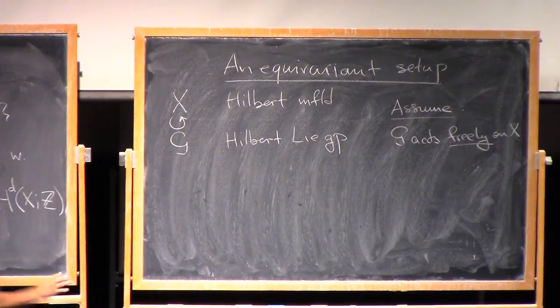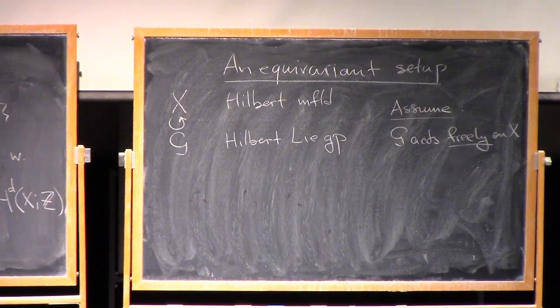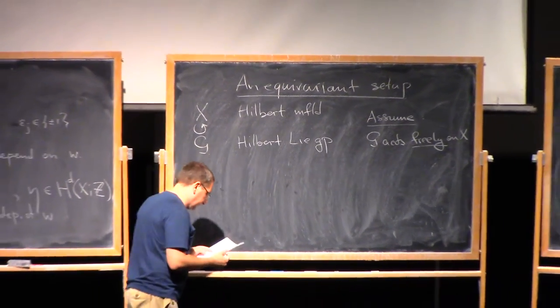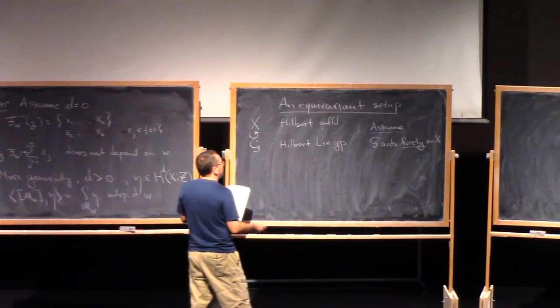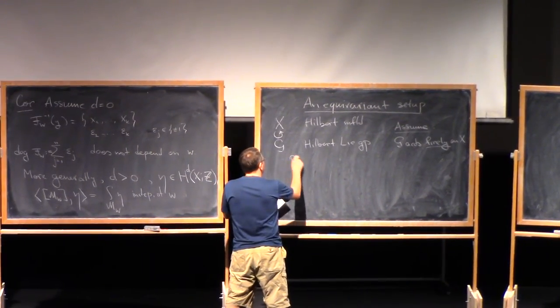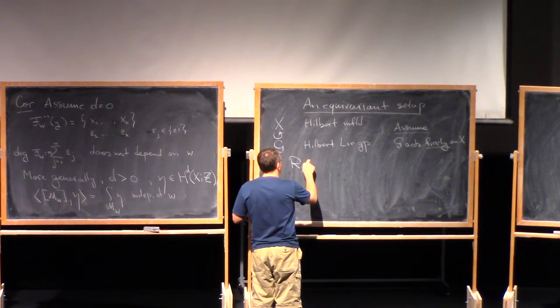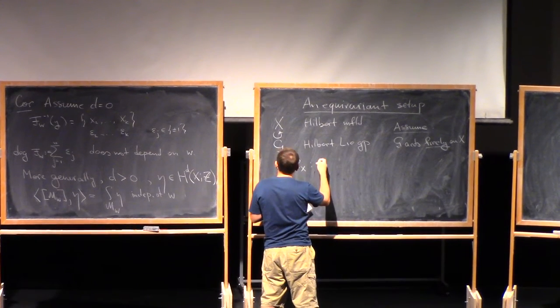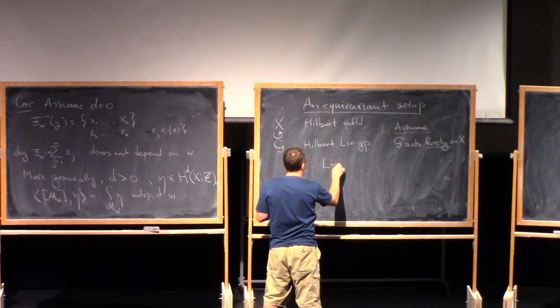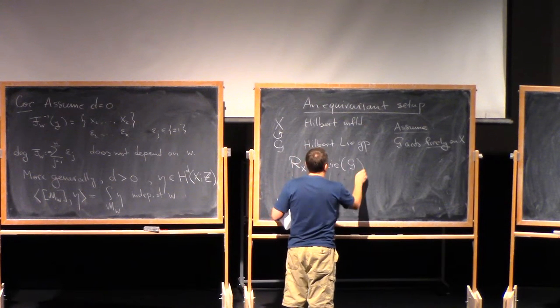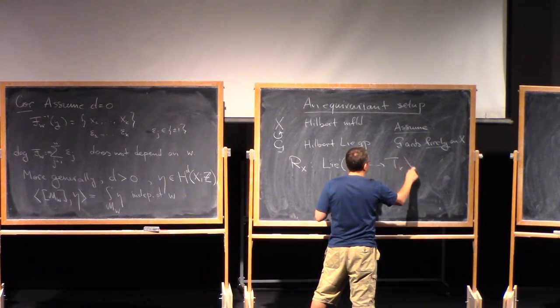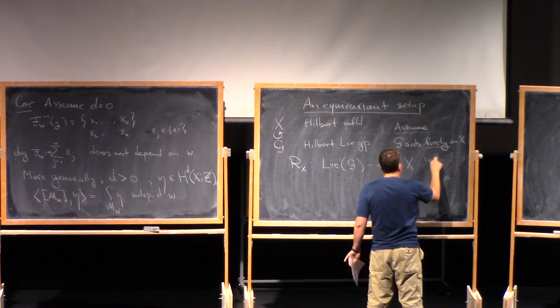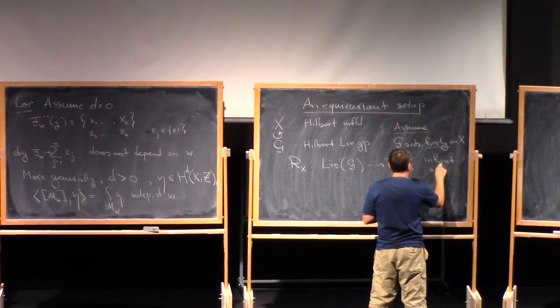And this acts on our manifold x, so I assume that the action is on the right. But what is a little bit more important is that I will assume g acts freely on x. But what we have is we have an infinitesimal action of g on x, that is a linear map from the Lie algebra of g into tx x. So this is the infinitesimal action.